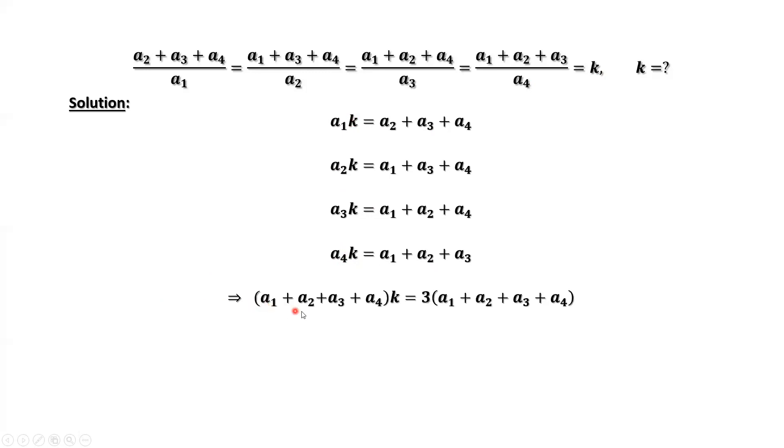A1 plus A2 plus A3 plus A4 times K. The right-hand side, we can see how many A1s here: one, two, three. We have three A1. How about A2? One, two, three. We have three A2s. Similarly, we have three A3, three A4. This is the current result.